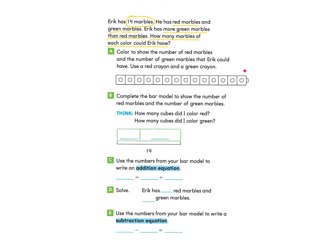Go ahead and pause and decide how many green marbles you want Eric to have and how many red, then color them in. I decided to choose 5 for red and 9 for green, counting out five red and nine green. Since 9 is a bigger number, we can see Eric has more green marbles than red. It's okay if you chose different numbers, as long as the green section is bigger than the red section.